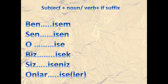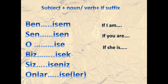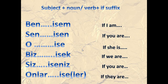The 'if' suffix is a conjugated suffix: isam, isan, ise, isek, iseniz, ise, or iseler. These may replace each other. In terms of meaning: ben isam means 'if I am,' sen isan means 'if you are,' o ise means 'if she/he is,' biz isek means 'if we are,' siz iseniz means 'if you are' (plural), and onlar ise means 'if they are.'